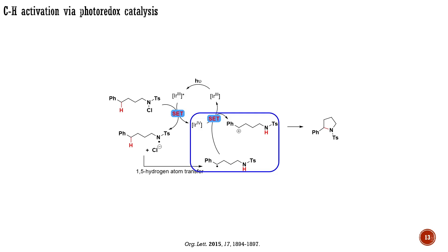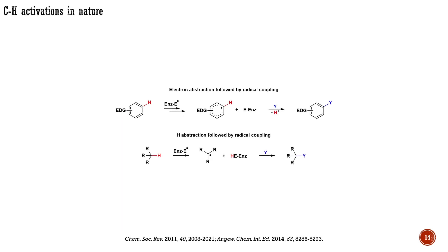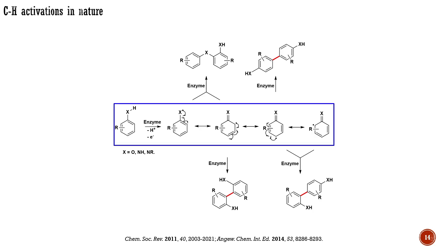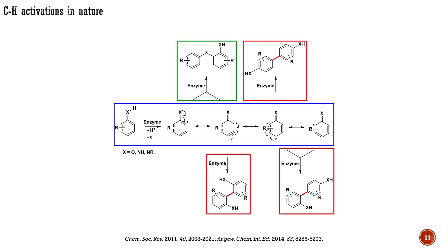Both processes are possible, and the outcome depends on the substrate and reaction conditions. CH transformations occurring in nature are mostly radical processes and share some similarities with CH activations by photoredox catalysis. Notably, in nature, CH activations are catalyzed by metalloenzymes, particularly by cytochromes located in our livers. For instance, one can observe the couplings of phenols, anilines, and their derivatives catalyzed by cytochromes. Initially, the enzyme abstracts an electron and a proton from the substrate, which can then undergo a number of selective radical couplings forming carbon-carbon or carbon-heteroatom bonds. The selectivity of these processes is determined by the enzyme. In contrast to photoredox catalysis, enzymes typically do not require a source of light for these transformations.